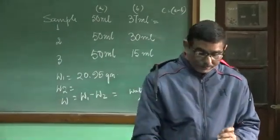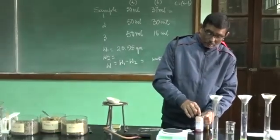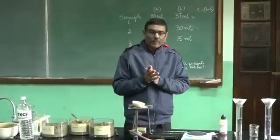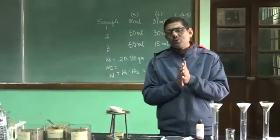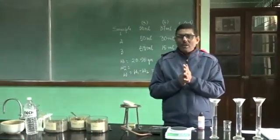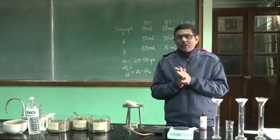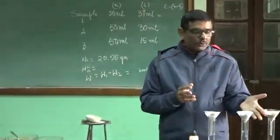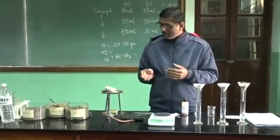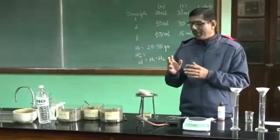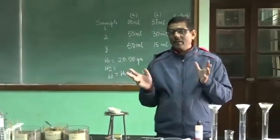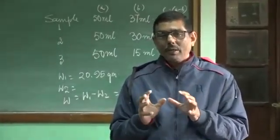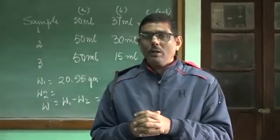Now you know that a pH of 7 is neutral, pH less than 7 is acidic, and more than 7 is basic. It is 6.5 — that means it is very close to neutral; the soil is neither too acidic nor too alkaline. Whether the soil is acidic or alkaline is very important so that farmers can be told and necessary treatment given to the soil for better agricultural output. So we have done three parts of this experiment: the percolation rate, the moisture content, and the pH of the soil sample collected from different sources. Thank you very much.